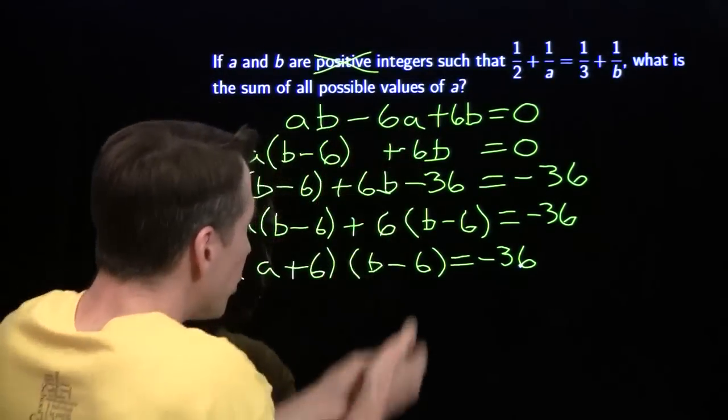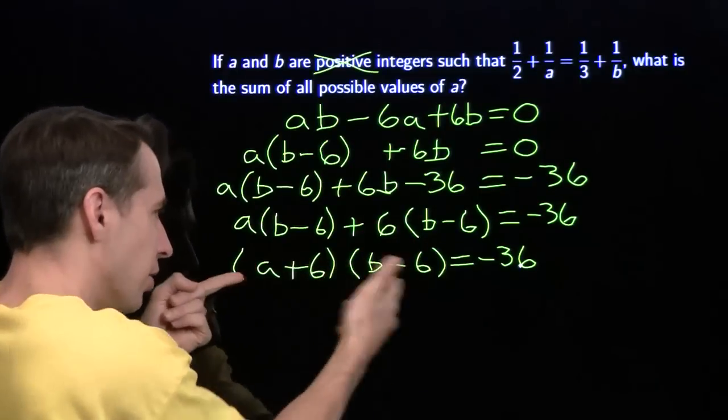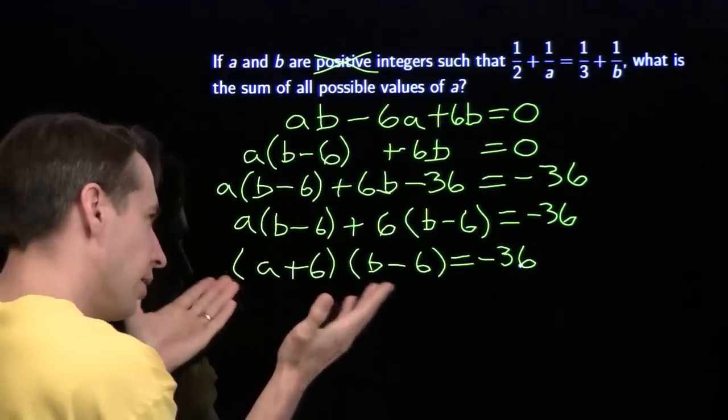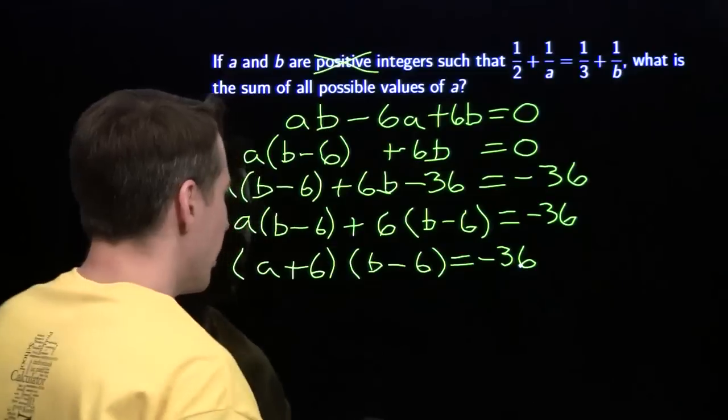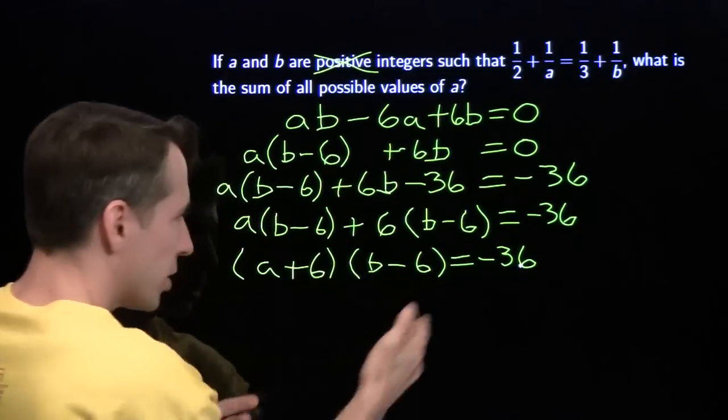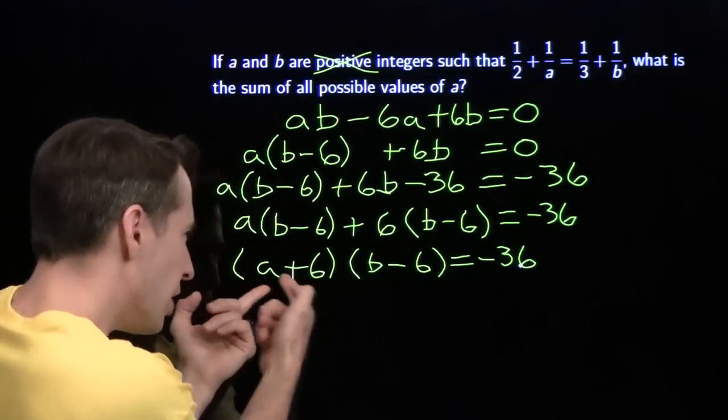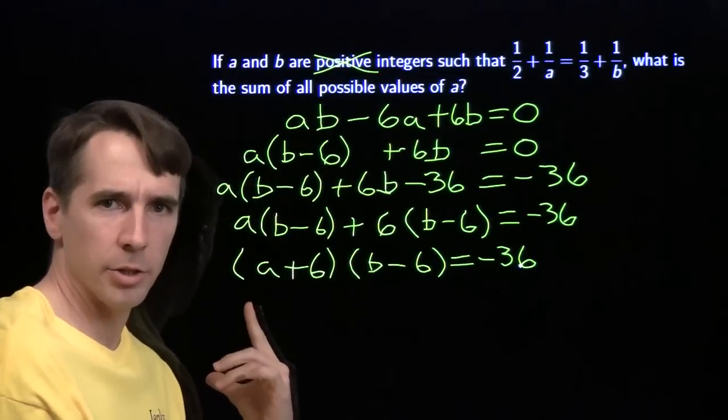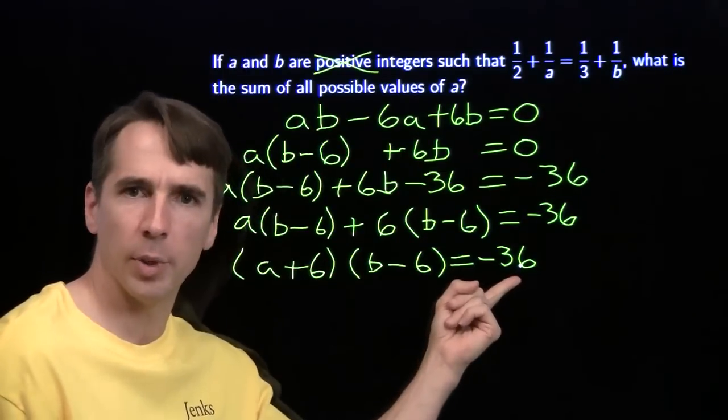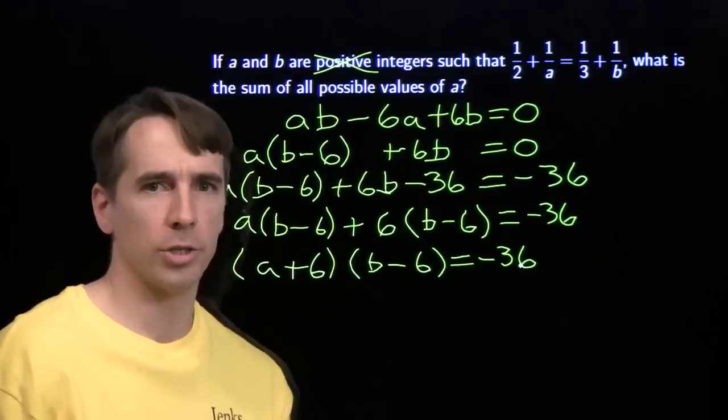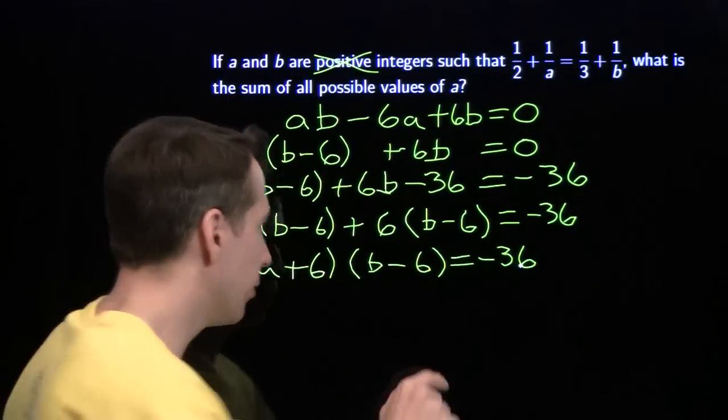We have a product, linear term, linear term. We can often throw in a constant here so that we can factor. That's problem solving strategy number 4 right there. We have this factored expression equal to an integer. Since we know a and b are both integers, these two factors have to be two integers that multiply to negative 36. And now we can crank out our solutions. We just list all the pairs of integers that multiply to negative 36.